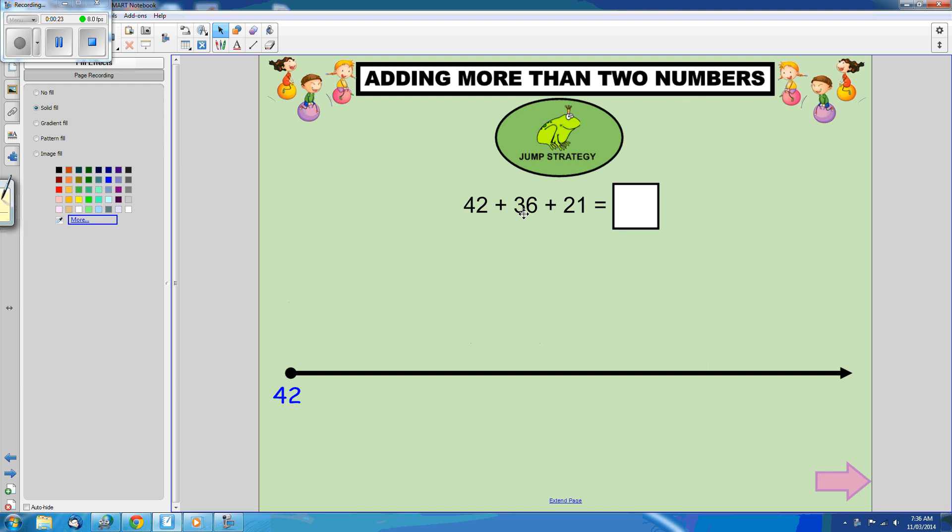The next step is that we're going to add 36, and we're going to do that by splitting it up and doing a few different jumps.